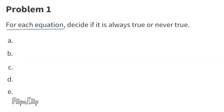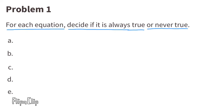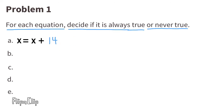Problem number 1. For each equation, decide if it is always true or never true. A: X minus 13 equals X plus 1. If I add 13 to both sides, the equation reads X equals X plus 14, and this is never true.